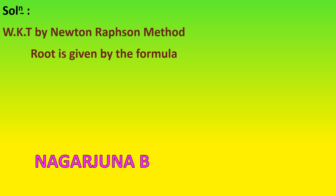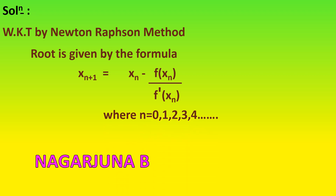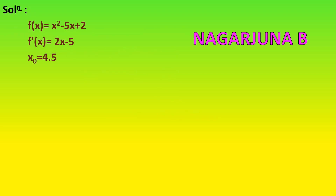By the Newton-Raphson method, the formula is xn+1 equals xn minus f(xn) divided by f dash of xn, where n equals 0, 1, 2, 3, etc. Now we shall start with the first iteration. We have f of x, f dash of x, and x0. First, we need to find f(x0), that is f(4.5), by substituting 4.5 in the f of x equation: f(4.5) equals 4.5 squared minus 5 into 4.5 plus 2 equals minus 0.25.